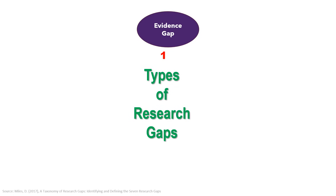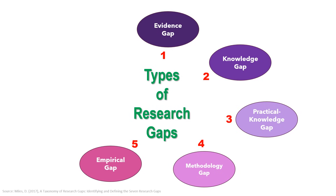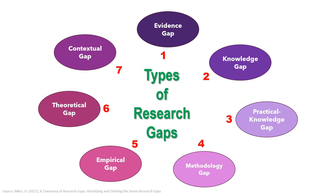The first category is evidence gap. The second is knowledge gap. The third is practical knowledge gap. The fourth is methodological gap. The fifth is empirical gap. The sixth is theoretical gap. And finally, the seventh category is contextual gap, also called population gap or data gap.